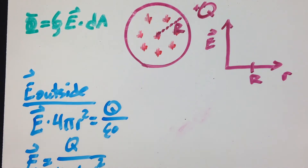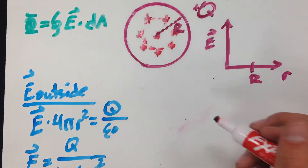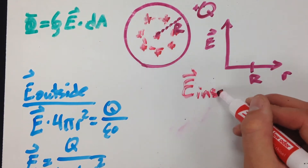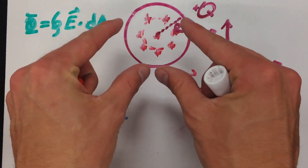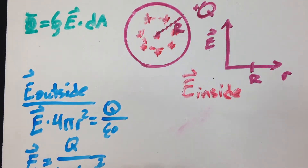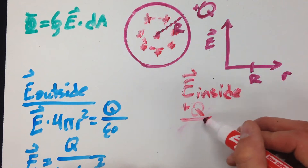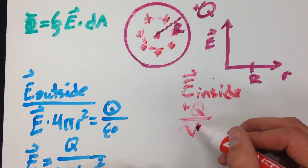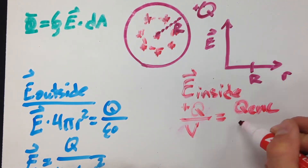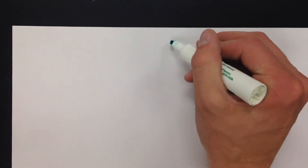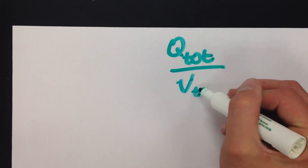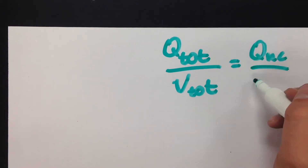Now when we're looking inside the sphere, we need to draw our Gaussian surface inside. This becomes a little more difficult because Q enclosed is not constant — as that Gaussian sphere moves further out, we enclose more and more charge. We can imagine the charge is evenly distributed, so total charge over total volume equals Q enclosed over the volume my Gaussian surface encloses.